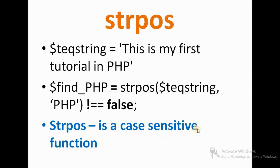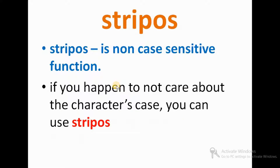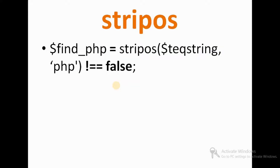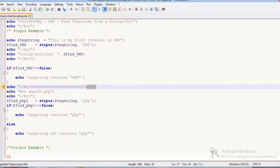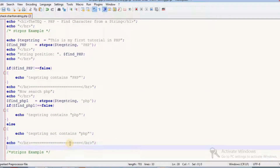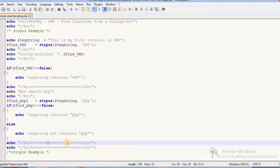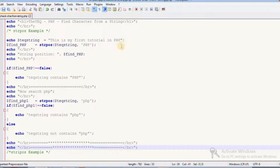There is another function called stripos — that's an 'i' after the 'r' — which is a non-case-sensitive function. If you don't care about character case, you can use stripos. In the same manner, instead of strpos, we include that 'i' after 'r'. Let's see an example of stripos.